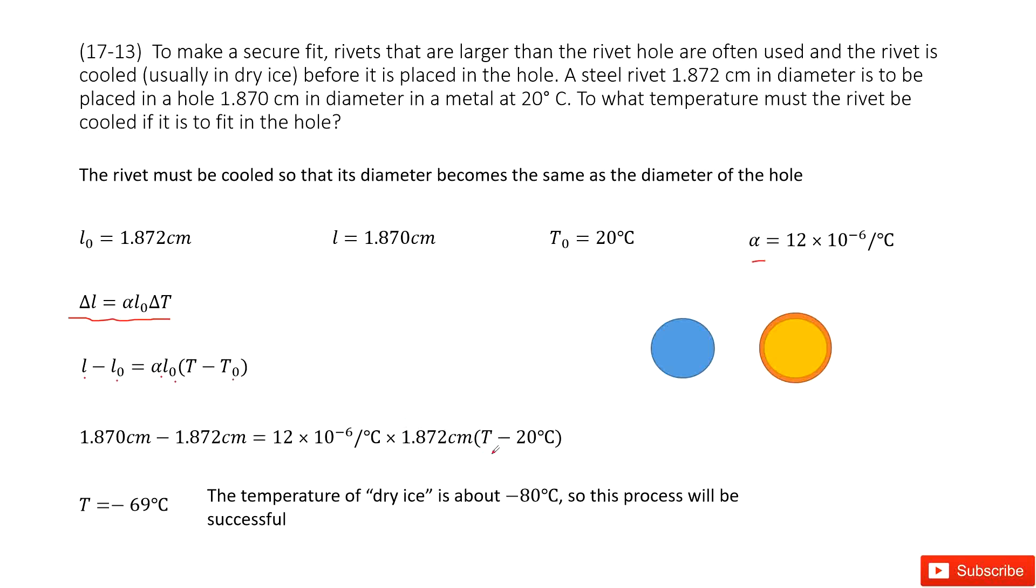The only unknown is T. And we can find after calculation, T is just around negative 70 degrees. And we know the temperature for the dry ice is about negative 80 degrees. So it works. Thank you.